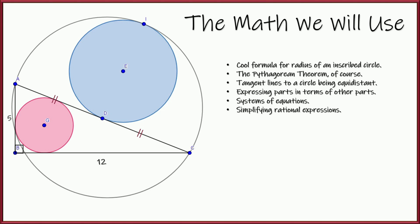Pythagorean theorem always seems to come up. We're going to have to use the fact that tangent lines that intersect are equal distance from the circle. And then the trickiest part, I think, is we have to express some parts in terms of others in these problems right here to set up a system of equations. And in the end, we're going to be simplifying some rational expressions.